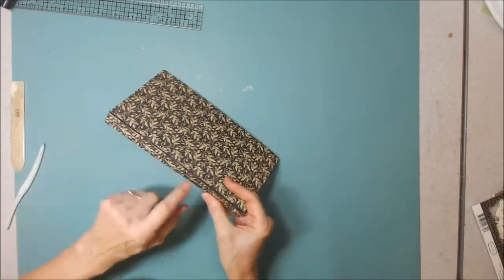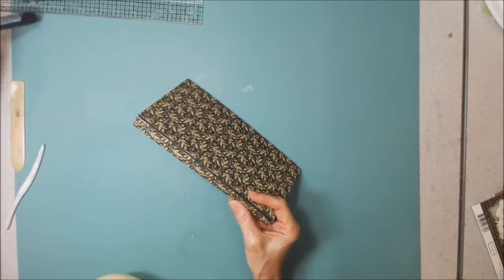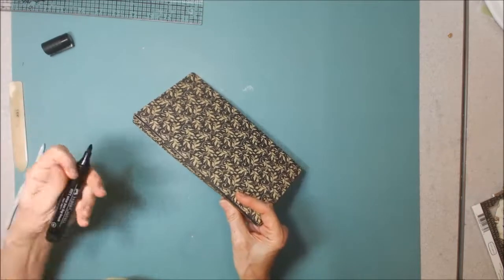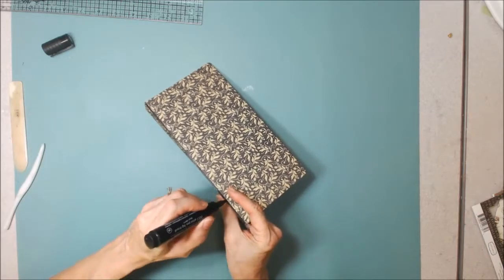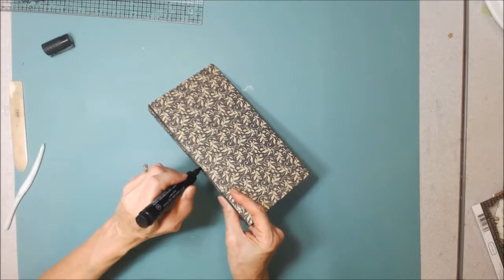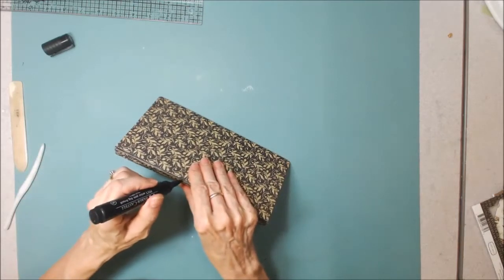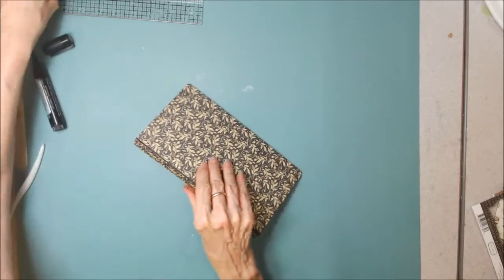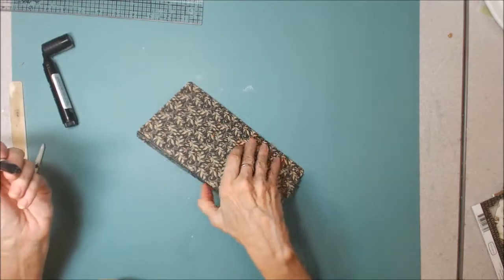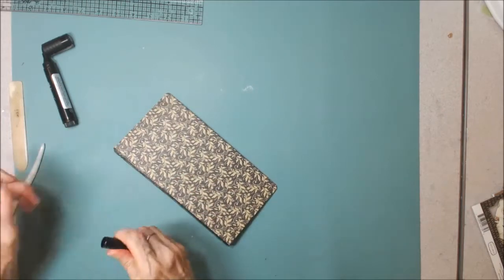One thing I like to do is I like to ink this channel here. It looks better than the raw cardboard. So what I've used is a Faber-Castell big brush pen. I've just gone in here and colored that channel. You have to be really careful because one slip of the pen and oops, there goes your cover. The Sharpie works pretty good too, but my Sharpies are kind of old and the point's basically gone on them.